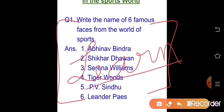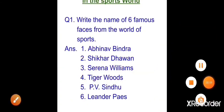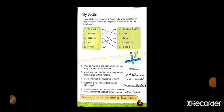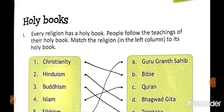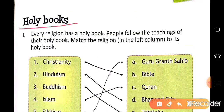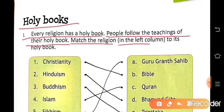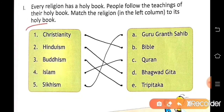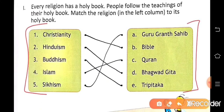Now, page number 35 — Holy Books. Every religion has a holy book and people follow the teachings of their holy book. Match the religion in the left column to its holy book. Some religions are given here and their holy books are given here — we have to match the religion to the holy book.